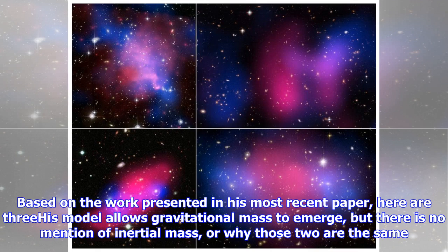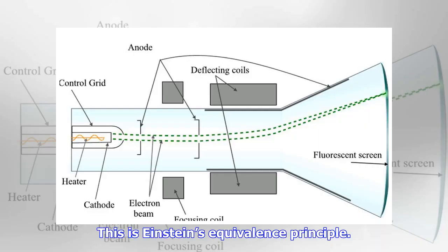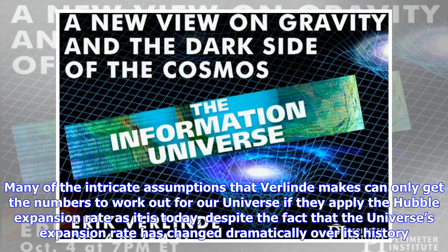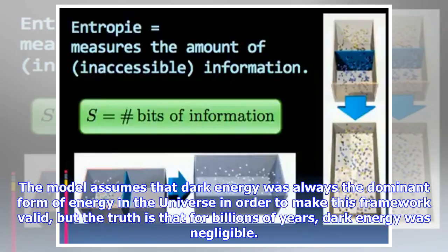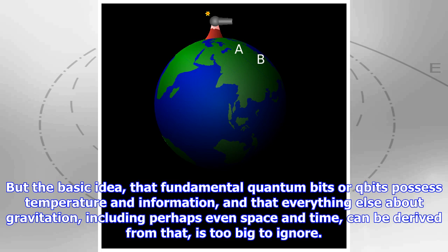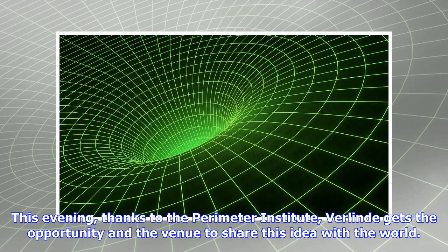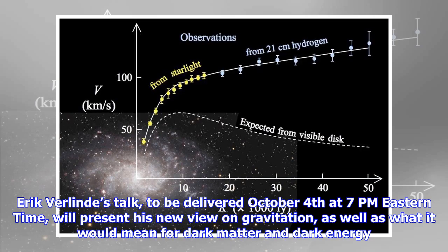But there are also some large open questions or problems with no satisfactory answers. Based on the work presented in his most recent paper, here are three: His model allows gravitational mass to emerge, but there is no mention of inertial mass or why those two are the same—this is Einstein's equivalence principle. Many of the intricate assumptions that Verlinde makes can only get the numbers to work out for our universe if they apply the Hubble expansion rate as it is today, despite the fact that the universe's expansion rate has changed dramatically over its history. The model assumes that dark energy was always the dominant form of energy in the universe, but the truth is that for billions of years, dark energy was negligible. But the basic idea, that fundamental quantum bits or qubits possess temperature and information, and that everything else about gravitation, including perhaps even space and time, can be derived from that, is too big to ignore.